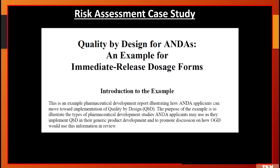This is a case study pulled from the internet — a quality by design example that the FDA has given on their website for an immediate release dosage form. A link to this PDF file will be provided in the description box. In this PDF file, all the steps of QBD are explained using an immediate release dosage form example called astryptin, which can be found on the USFDA website. If you want me to explain this PDF in detail, please leave comments in the comment box, along with any other topics you want a lecture on.